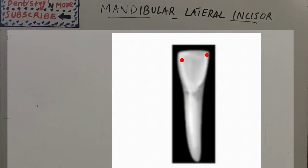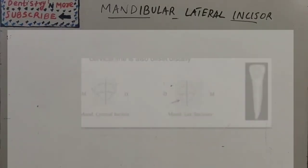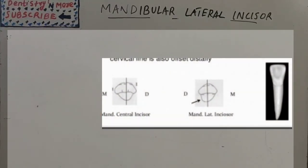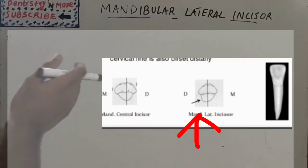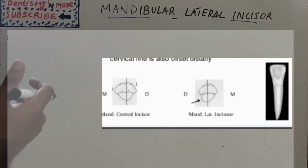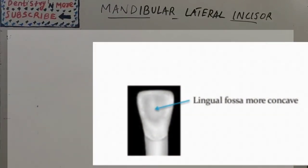Both heights of contour are still in incisal third. Lingual aspect: the lingual outlines are similar to those of labial aspect. The structure of lingual surface is similar to their counterparts on the central incisor except cingulum, which is more offset to distal. You can see it here. As a result, curvature of cervical line is also offset distally. Concavity in lingual aspect is slightly more when compared to the mandibular central incisor, and mesial margin which is more curvature compared to the distal marginal ridge.